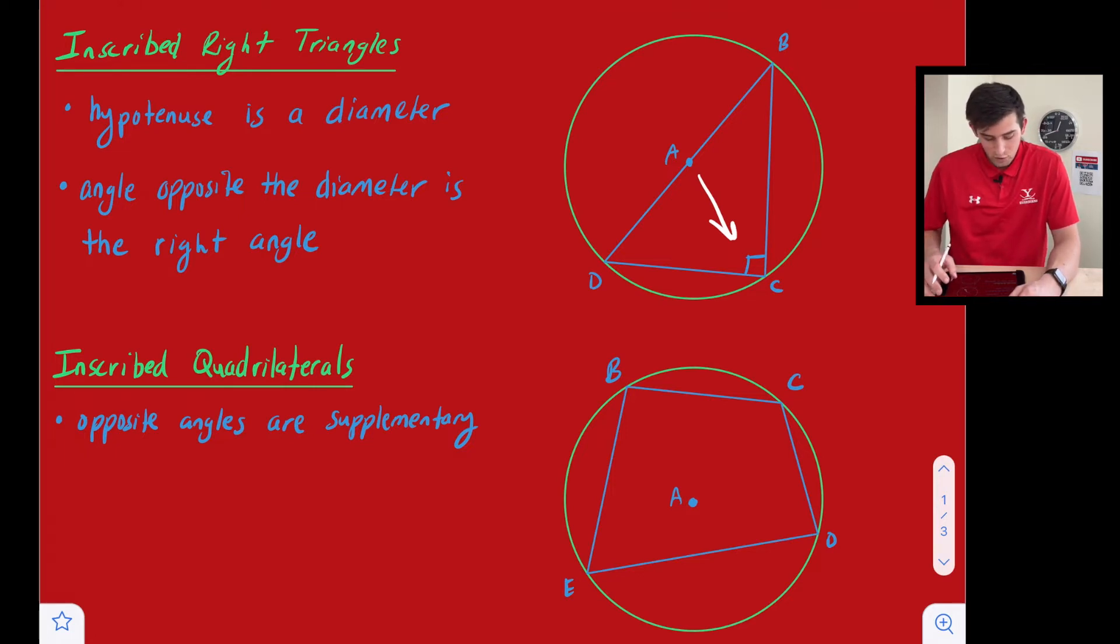Next, we're going to talk about inscribed quadrilaterals. And really the only thing we need to know there is that the angles that are opposite of one another need to be supplementary, which just means they add to 180 degrees.